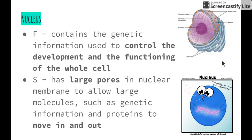The syllabus dot point requires us to describe the relationship between the structure and function of these organelles. Some organelles have a very defined structure which helps them maintain their function. In particular, the nucleus: its function is to contain the genetic information that controls the development and functioning of the whole cell — basically, the nucleus is the brains of the cell, telling all other parts what to do. Its membrane has large pores that allow molecules such as DNA, RNA, or proteins to move in and out and travel to different parts of the cell to carry out different jobs.